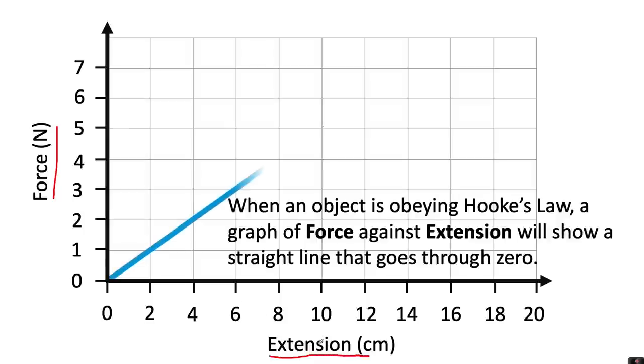So when an object is obeying Hooke's law, a graph of force against extension will show a straight line that goes through zero. And if it obeys Hooke's law, what this should show is that when you double the force, so when you go from one and double it to two, the extension should also double.